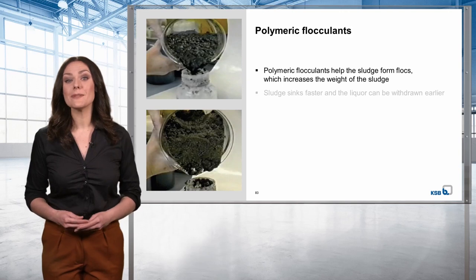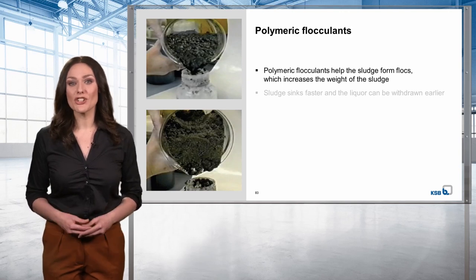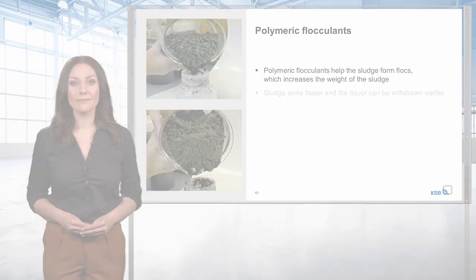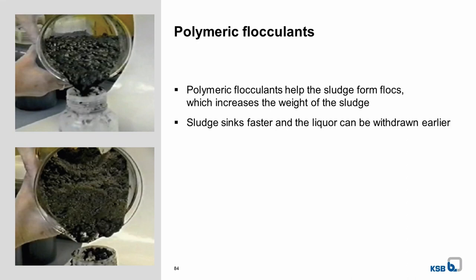In total, the thickening process takes quite a long time. This can be problematic because the larger the wastewater treatment plant, the larger the sludge volume. Secondary sludge in particular occurs very quickly in large volumes. To accelerate the thickening process, larger wastewater treatment plants add polymeric flocculants. They help the sludge form flocks, which increases the weight of the sludge. Consequently, the sludge sinks faster and the liquor can be withdrawn earlier.